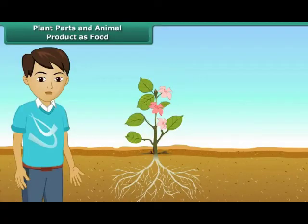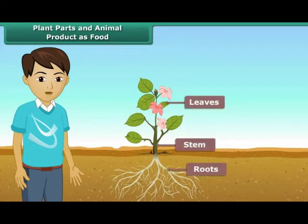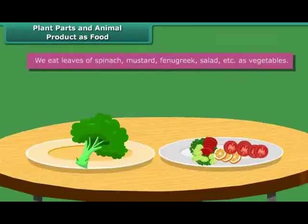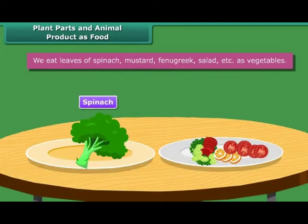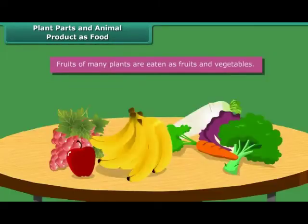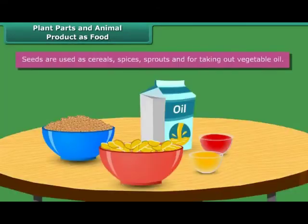As we know that we get most of the food from plants, various parts of plants give us different types of food. We eat leaves of spinach, mustard, fenugreek, salad, etc. as vegetables. Fruits of many plants are eaten as fruits and vegetables. Seeds are used as cereals, spices, sprouts and for taking out vegetable oil.